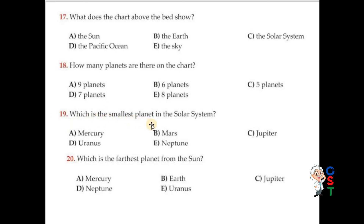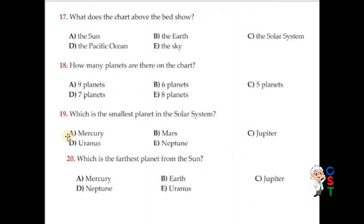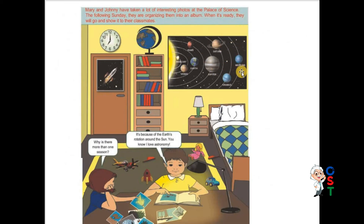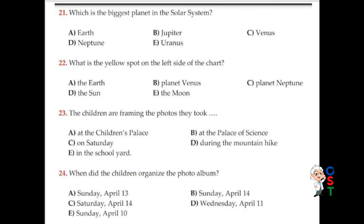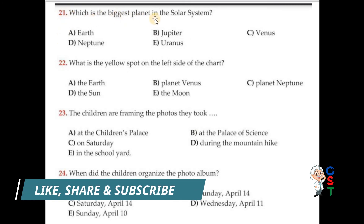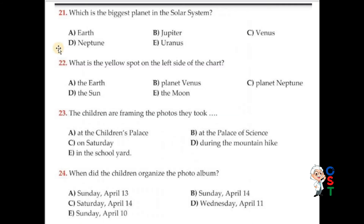Question number 19: Which is the smallest planet in the solar system? Looking at the diagram, Mercury is the smallest. A is correct. Question number 20: Which is the farthest planet from the sun? Options are Mercury, Earth, Jupiter, Neptune, and Uranus. D is correct — Neptune. Question number 21: Which is the biggest planet in the solar system? Options are Earth, Jupiter, Venus, Neptune, and Uranus. Looking at the diagram, Jupiter is the biggest. B is correct.